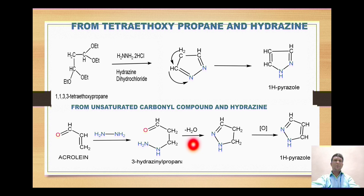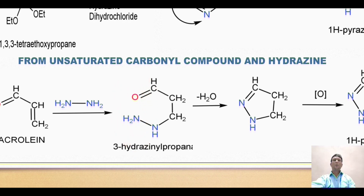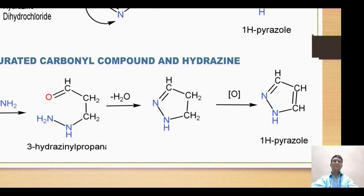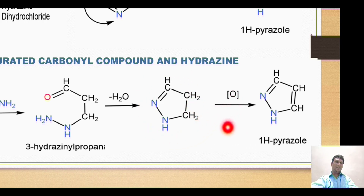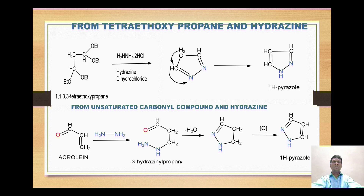This compound then releases one water molecule. The oxygen of the aldehyde and the amino group are in close contact, so the nitrogen attacks the carbonyl carbon in a nucleophilic addition, followed by elimination of water, generating a double bond between that carbon and nitrogen. This gives a dihydro-cyclized pyrazole derivative. This compound then undergoes oxidation, whereby one hydrogen each from the two adjacent carbons is removed as H2, generating a double bond between those carbons and yielding 1H-pyrazole.